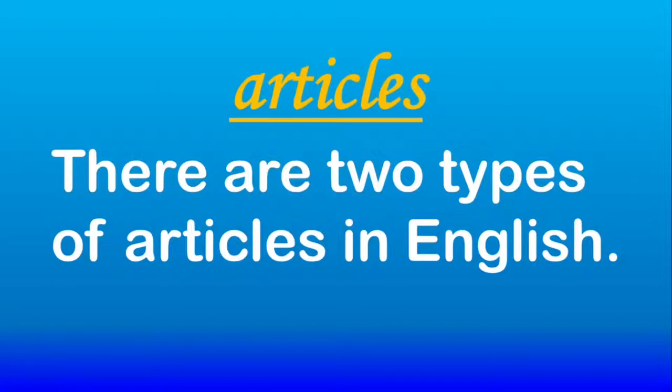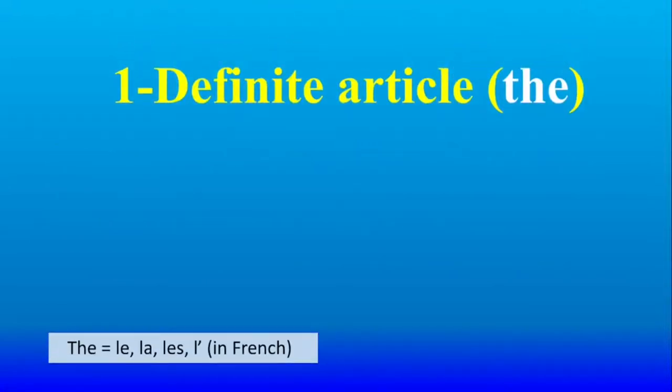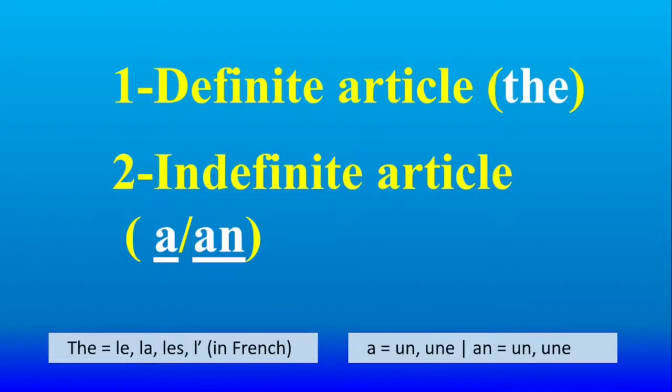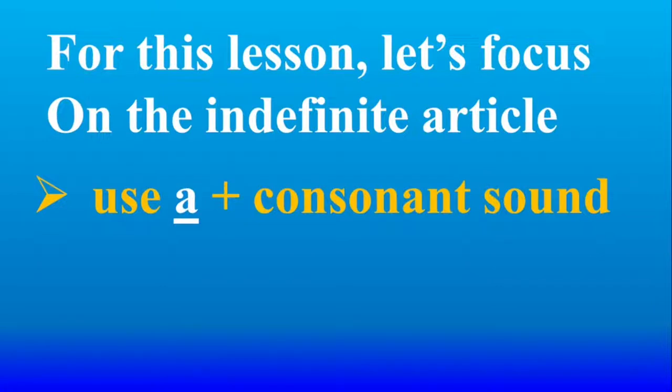Articles. There are two types of articles in English. Definite article, which is the. Indefinite article, which are A and N. For this lesson, let's focus on the indefinite article.